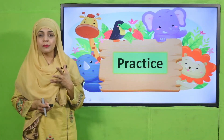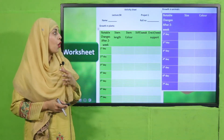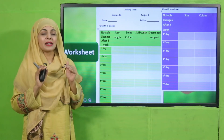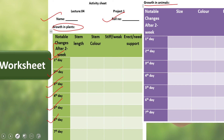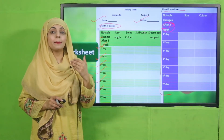For practice, you can download the worksheet from the description box below this video, or get it in printed form from your teacher. Record your activity observations on the worksheet — you can attach it to your notebook or present it as a file in class. The worksheet has two parts: growth in plants (day one through seven) and growth in animals, where you record daily changes over two to three weeks.